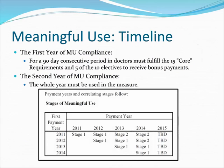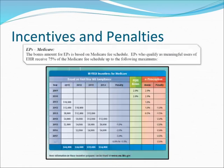Meaningful Use Timeline: The first year of compliance covers a 90-day consecutive period, and doctors must fulfill the 15 Core requirements and 5 of the 10 Electives to receive bonus payments. The second year of compliance requires the whole year to be used in the measure, with both incentives and penalties applying.